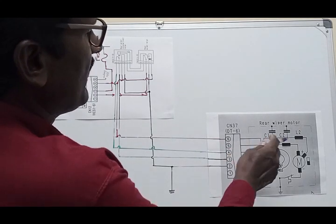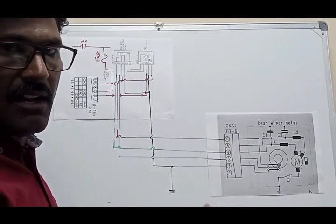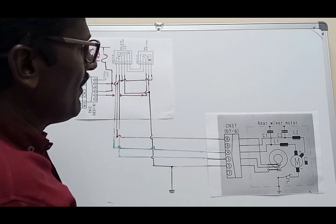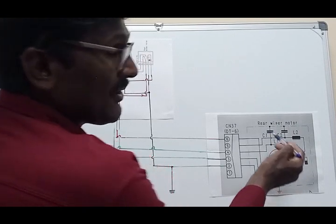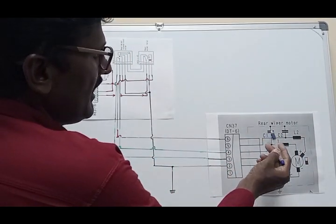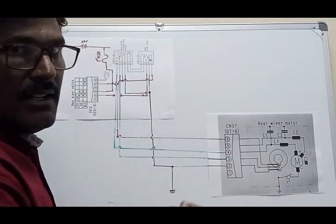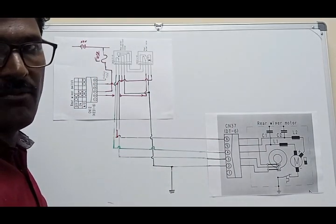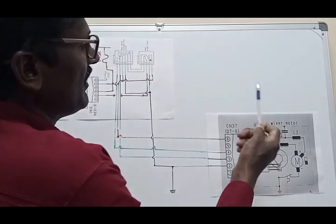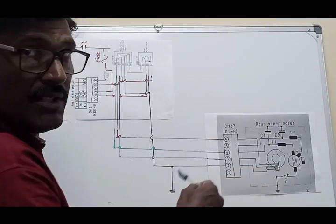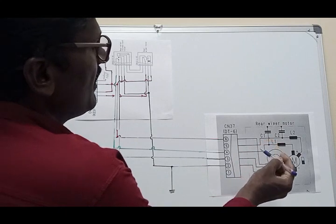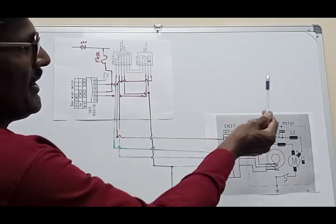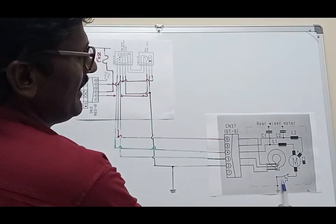Now the third point: why do we use the inductor and capacitor in this circuit? The inductor meaning: an inductor opposes the current and produces EMF — electromagnetic force. The inductor also stores energy — kinetic energy. The capacitor also stores energy — potential energy. Our wiper motor starts with the help of this inductor. You will be surprised: this wiper motor is due to this inductor. The inductor produces electromagnetic force. You can see here one device in this video.